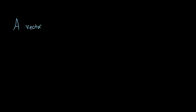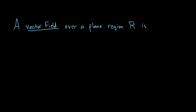In this video we're briefly going to discuss vector fields. A vector field over a plane region R is just a function. We tend to use capital letters, so I'll use big F. Sometimes people put a little arrow above the big F, just to denote that it is a vector. So it's a function that assigns a vector,